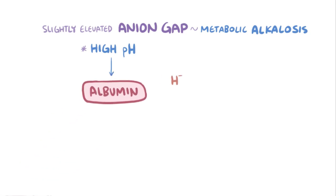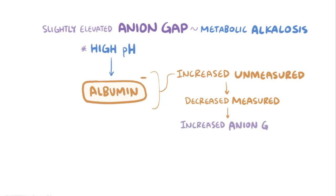A small elevation in anion gap can be seen in metabolic alkalosis. This is because a high or alkaline pH triggers albumin to release protons. This results in an increase in the net negative charge on each albumin molecule. Once again, there are more unmeasured anions around, in the form of albumin, and the bicarbonate and chloride ion concentrations go down, which makes the anion gap increase.